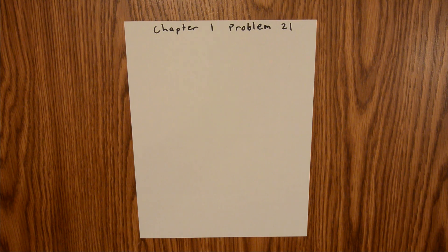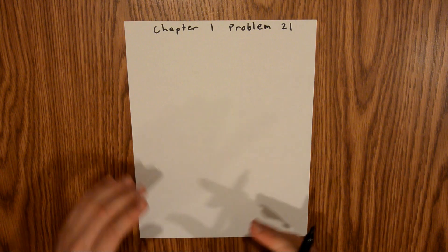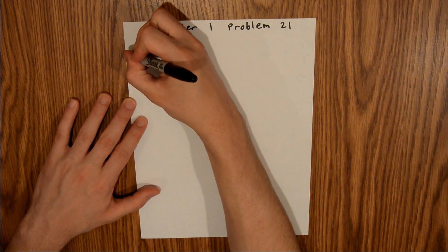Chapter 1 is all about measurement, and in Problem 21 we are asked to find how many atoms are on planet Earth. In the problem, we are given the mass, and so we can start with that.